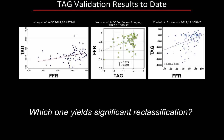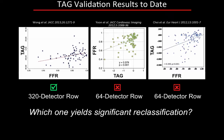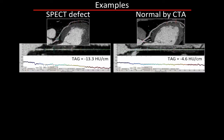In terms of other studies that have been done, they all show a correlation between TAG and fractional flow reserve, but with similar scatter plots. To date, only 320-detector-row CT seems to provide a TAG value that actually correlates with fractional flow reserve; 64 and lower detector rows, and even 256, did not find a significant reclassification of patients. Some examples: on the left, a case with a perfusion defect in the LAD territory and a large TAG of minus 13.3 Hounsfield units per centimeter; on the right, a normal coronary artery by CTA with a much smaller TAG of minus 4.6 Hounsfield units per centimeter.